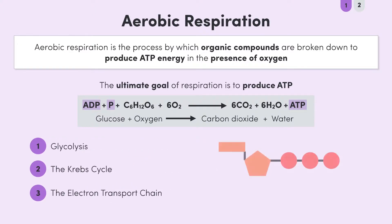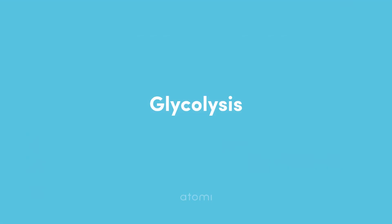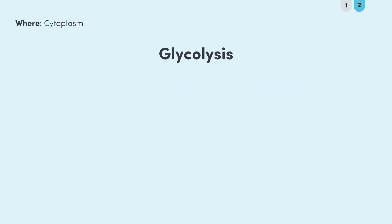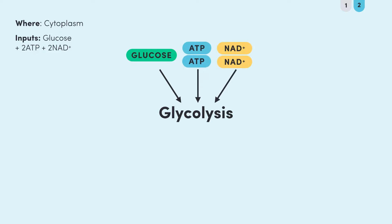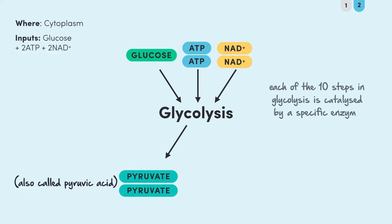And because ATP is the star of the show, we'll be tracking how much ATP is produced at each stage, which we also refer to as the ATP yield. Glycolysis occurs in the cytoplasm of the cell and occurs in both aerobic and anaerobic respiration. During glycolysis, the cell takes one molecule of glucose, two molecules of ATP, and two molecules of NAD+. These molecules all come together in a series of reactions which break down glucose into two molecules of a compound we call pyruvate, sometimes referred to as pyruvic acid. There are ten steps to get from glucose to pyruvate, and each step is catalyzed by its own specific enzyme.